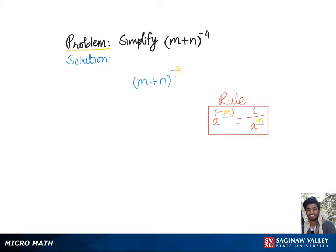Here in our problem we have a negative exponent in the numerator. So to simplify this, we'll move it to the denominator, which gives us 1 over (m + n) raised to the positive 4th power, which is the final simplified form.